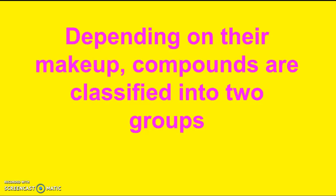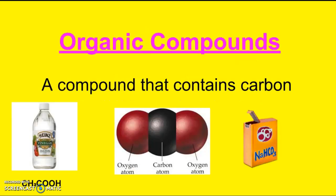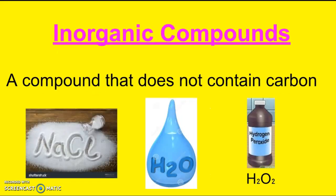Depending on their makeup, compounds are classified into two groups. First you have your organic compounds — this is any compound that contains carbon. So examples would be vinegar, carbon dioxide, or baking soda. The other group is the inorganic compounds, a compound that does not contain carbon. So table salt, water, or hydrogen peroxide — none of those have carbon in them, so they're classified as inorganic compounds.